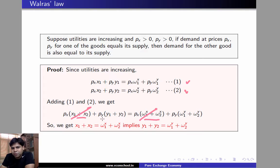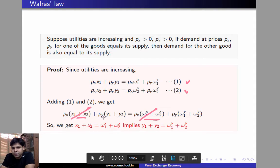And since PY is positive, we'll get that Y1 plus Y2 must also equal omega 1Y plus omega 2Y. So that means if it turns out that one of the markets clears, then the other market will automatically clear.